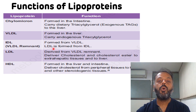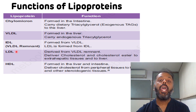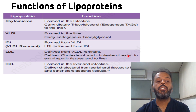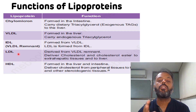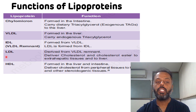IDL, or intermediate density lipoprotein, is the VLDL remnant — it is formed from VLDL. LDL, or low density lipoprotein, is formed from IDL. LDL is derived from the VLDL remnant and delivers cholesterol and cholesterol esters to the extrahepatic tissues. That is why LDL is known as bad cholesterol.